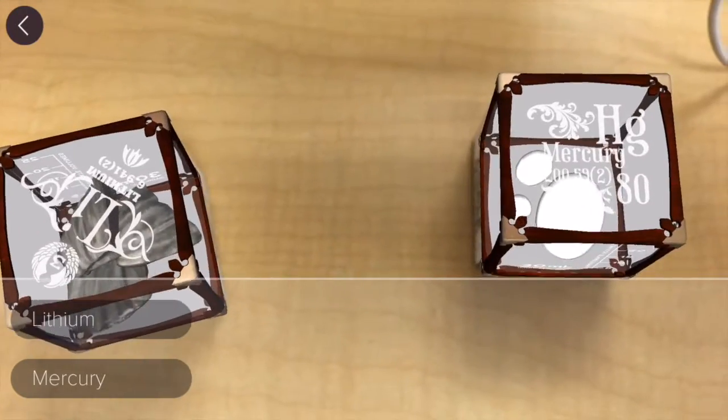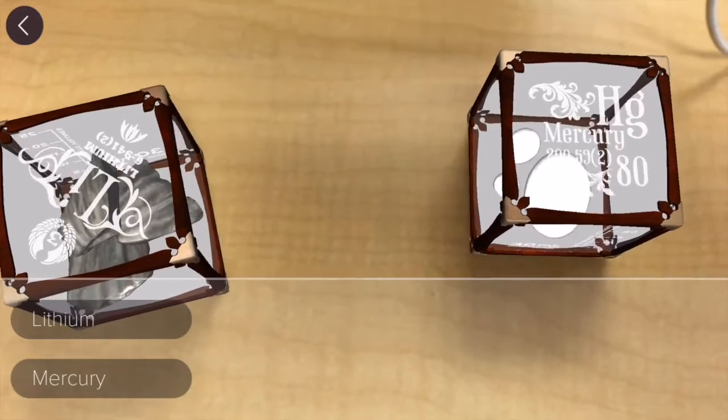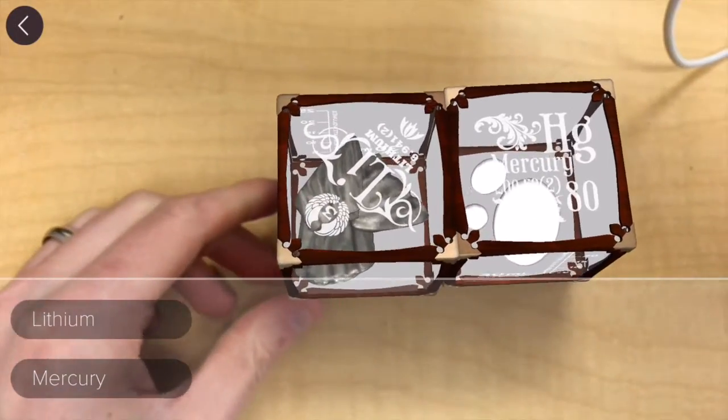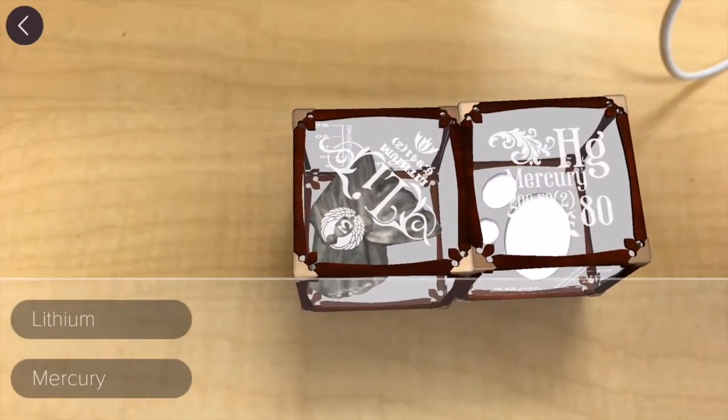If you have two elements that won't combine, for instance lithium and mercury, you put those two together, it knows nothing happens.